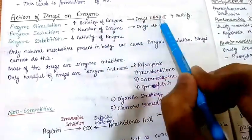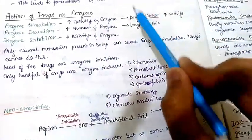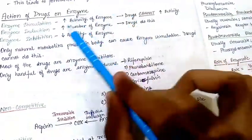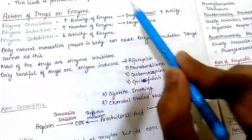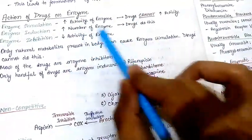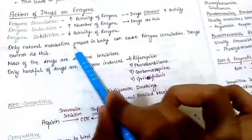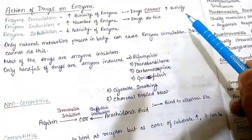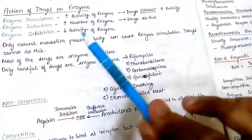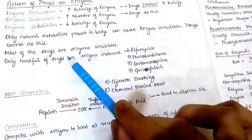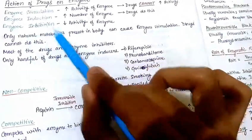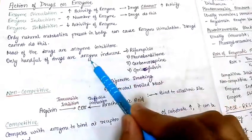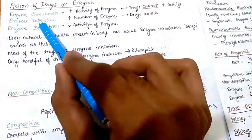Drugs cannot increase the activity of enzymes — drugs usually do not act as enzyme stimulants. Drugs only cause enzymatic induction, meaning drugs can increase the number of enzymes. Only natural metabolites present in our body can cause enzymatic stimulation — drugs cannot. Most drugs come under the category of enzyme inhibitors; only a handful of drugs are responsible for enzyme induction.